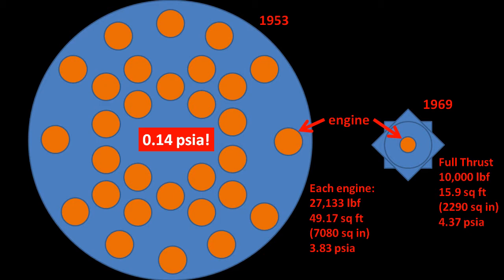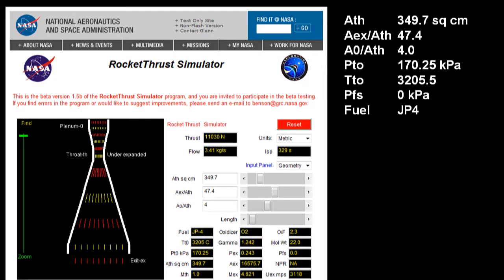So, how do I explain von Braun's 0.14 PSI? He's the rocket expert, and his numbers are correct, by God. Well, if you look at my video response to pseudonautics episode 3, Soft Landing,